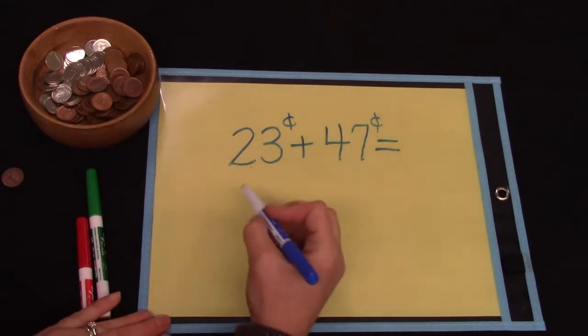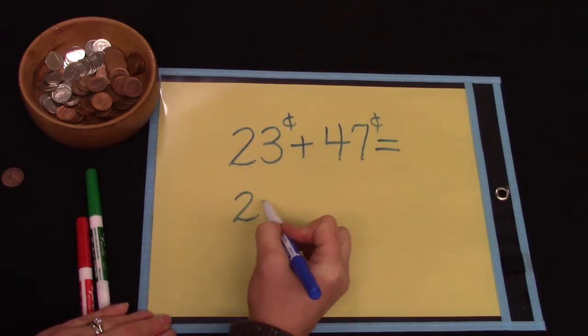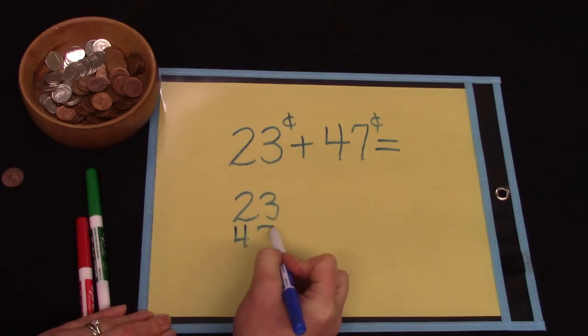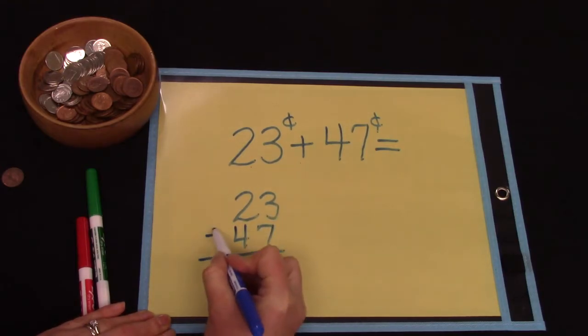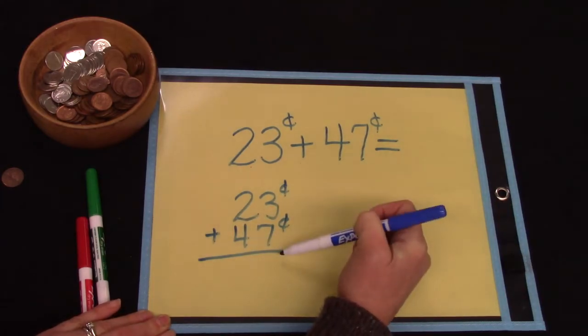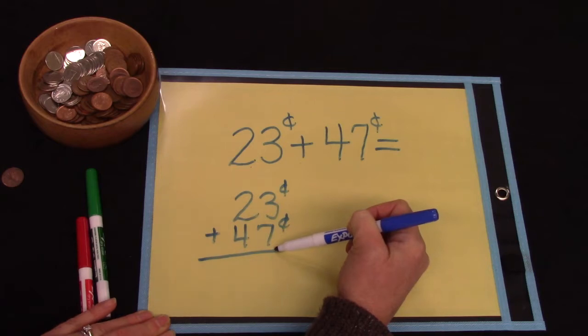It's much easier to answer this question if we write it vertically or on top of each other. If we write it this way then we can easily see which digits are in the ones place or the pennies.